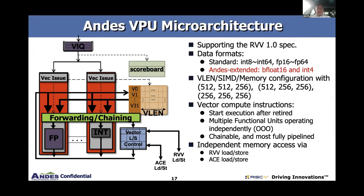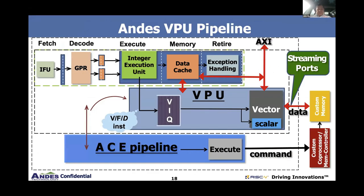What have we extended from the standard vector extension? We put two AI-specific data formats: vfloat16 and int4. Configurable VLAN SIMD memory configuration. We fully support RISC-V vector loads and stores, and ACE loads and stores as well — all to increase bandwidth. The previous block diagram had a choke point at the AXI bus for both CPU and vectors. We can still communicate on the AXI bus with loads and stores, but we now have a separate streaming port to talk to custom memory and custom accelerators — providing higher bandwidth, dedicated memory, predictable latency, and high performance.